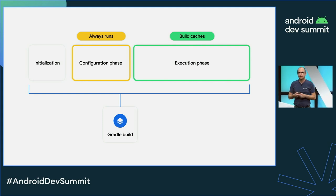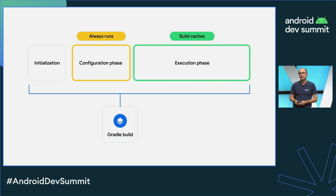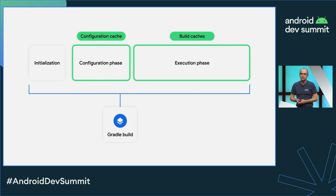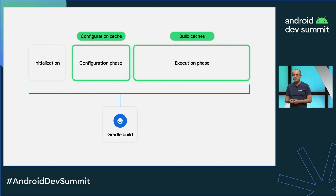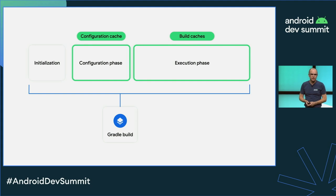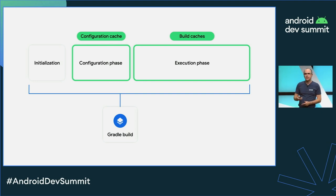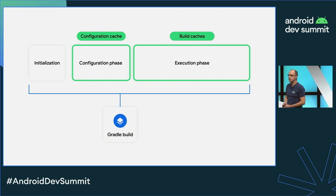We worked with Gradle to introduce this feature where we can cache the task tree and reuse it, making the configuration phase a lot faster. Usually it's a local cache, so it goes really fast. It is not yet fully stable — there is a flag you can use to turn it on — but we are working hard with Gradle to release this feature as stable by end of this year. Please try turning it on and report any issues you find. It will really improve your build speed and iterative cycle.